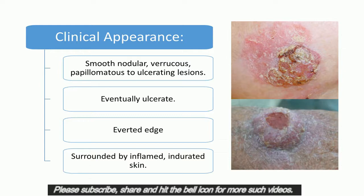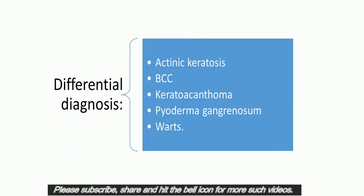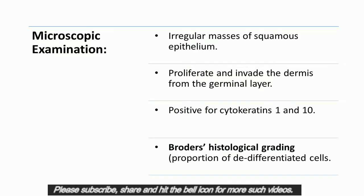Clinical Appearance: The appearance of SCC may vary from smooth nodular, varicose, papillomatous to ulcerating lesions. However, all variants will eventually ulcerate as they grow. The ulcers have a characteristic everted edge and are surrounded by inflamed, indurated skin. The differential diagnosis of an SCC includes Actinic keratoses, BCC, Keratoacanthoma, Pyoderma gangrenosum, and warts. On microscopic examination, characteristic irregular masses of squamous epithelium are noted to proliferate and invade the dermis from the germinal layer. This tumor stains positive for cytokeratins 1 and 10.